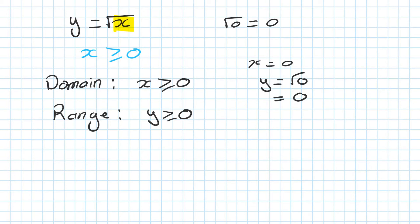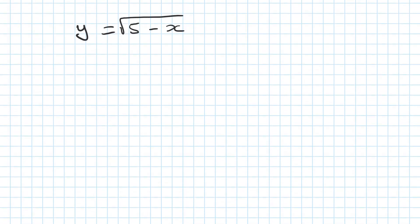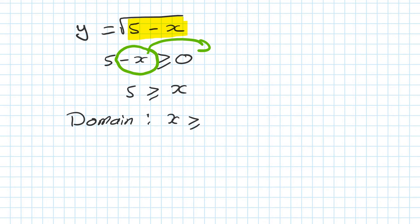How about y is equal to square root of 5 minus x? To find the domain and range for this, the same rule applies — you cannot square root a negative number. So inside here must be greater or equal to 0. That's the condition: 5 minus x must be greater or equal to 0. Moving negative x to the other side gives 5 is greater or equal to x, so x is less than or equal to 5. So your domain is x less than or equal to 5.